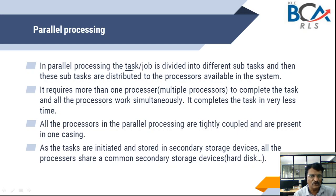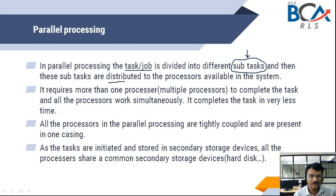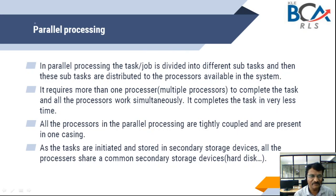The task or job in hand is divided into sub-tasks. Parallel processing is done where huge volumes of processing as well as huge volumes of data are involved. That huge volume of processing or data is divided into sub-manageable tasks, and these sub-tasks are distributed to the processors available in the system. The name itself indicates that all these sub-tasks are executing parallelly — concurrent execution of multiple tasks happens in parallel processing.